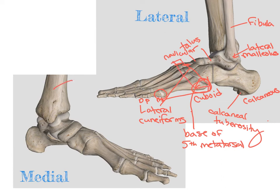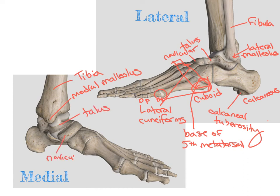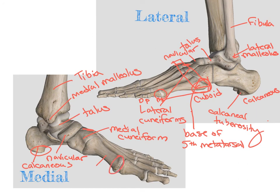Looking from a medial view, here we have our tibia as well as our medial malleolus. Moving anterior, we have our talus and our navicular. On the opposing side that we can't see would be the cuboid. Here we have our calcaneus with our calcaneal tuberosity on the bottom. We have our medial and intermediate cuneiform. Here we see our first metatarsal — the first metatarsal head is the end of that first metatarsal — followed by our proximal and distal phalanx. For the rest of the foot, we would have a distal phalanx, middle phalanx, proximal phalanx, and metatarsal.